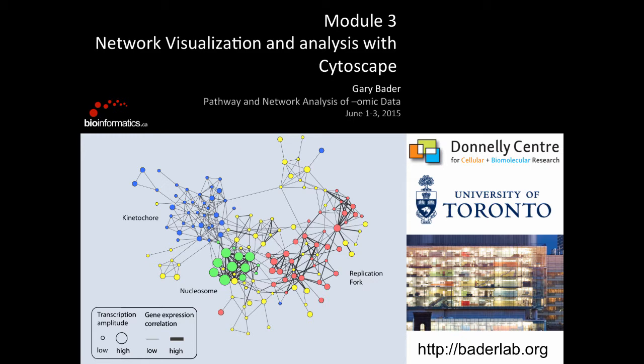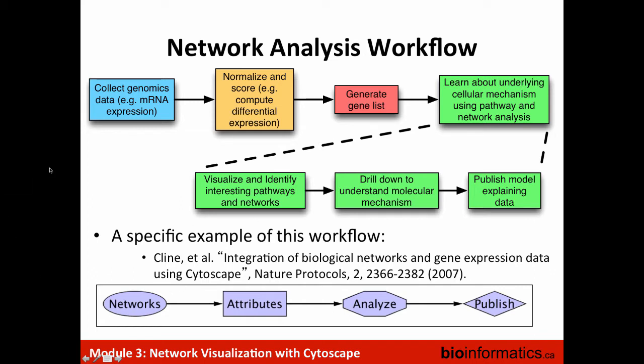For the last part of the day we're going to learn about visualizing and identifying interesting pathways and networks. So far today we've talked about GSEA and G-Profiler - tools that allow you to input a gene list or a ranked gene list and perform pathway enrichment analysis. The results of those are tables of pathways with p-values, and what we're going to work on this afternoon is how to visualize those in a better way.